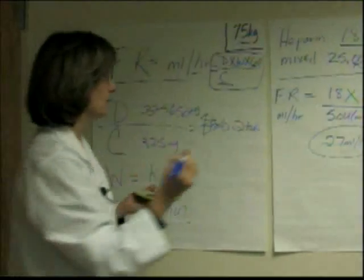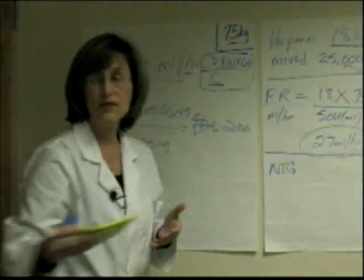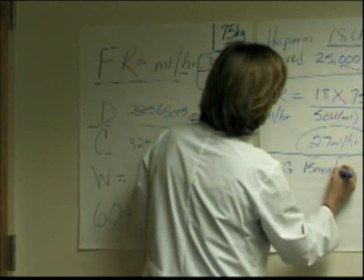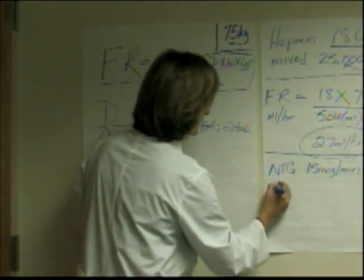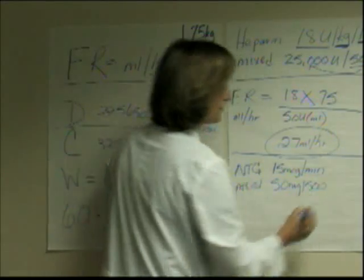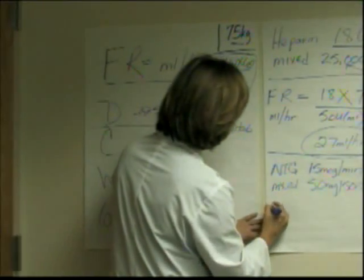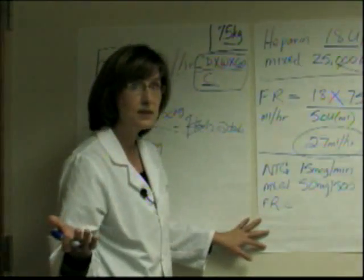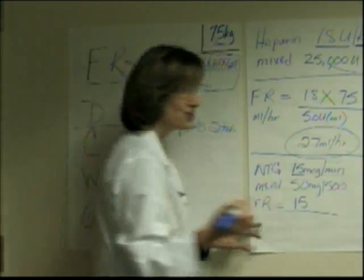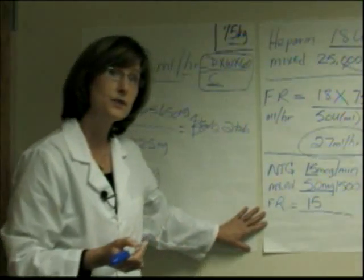Let's do nitroglycerin. I have a nitroglycerin drip ordered to infuse at 15 micrograms per minute. It is mixed 50 milligrams in 500 milliliters. Go back to your equation and start building with the components you need. Flow rate always begins with dose over concentration. The dose ordered is 15 micrograms. Now concentration gets a little tricky, because it was mixed in milligrams but it's ordered in micrograms.